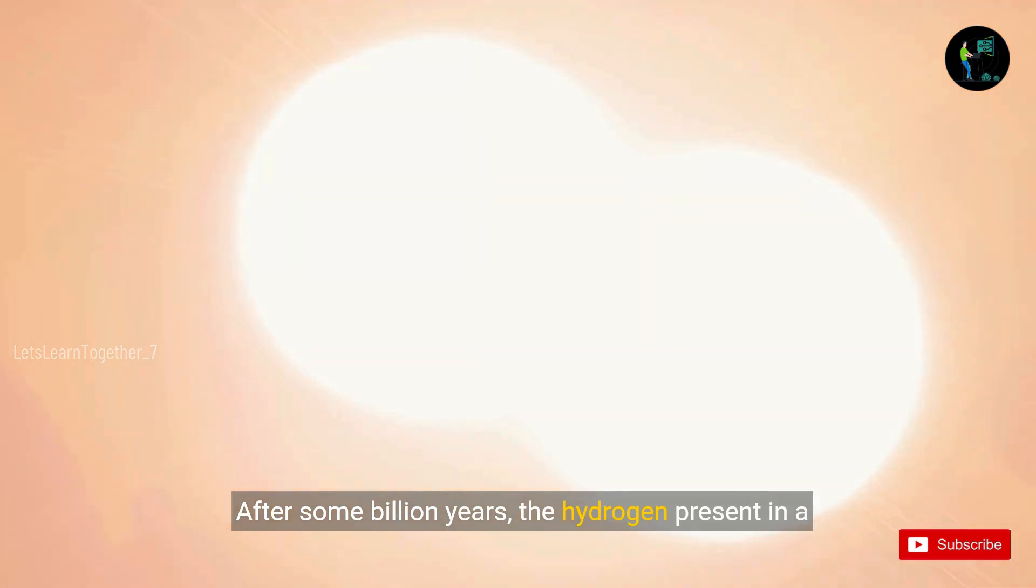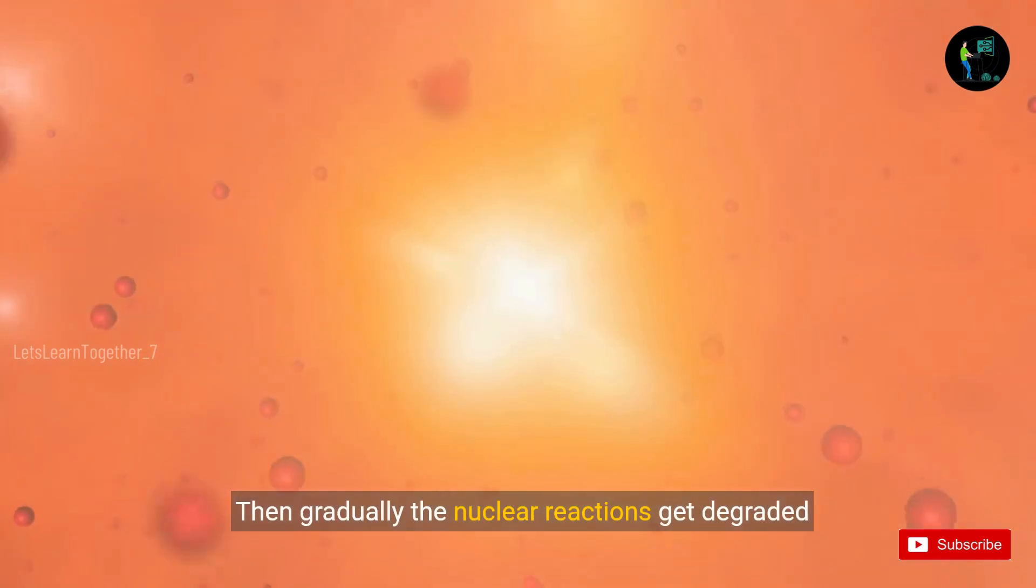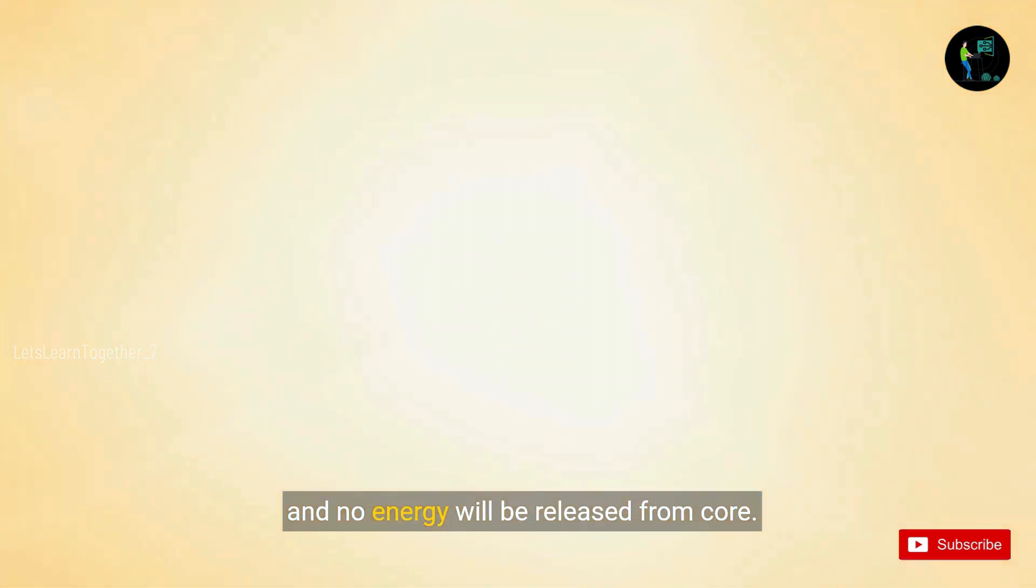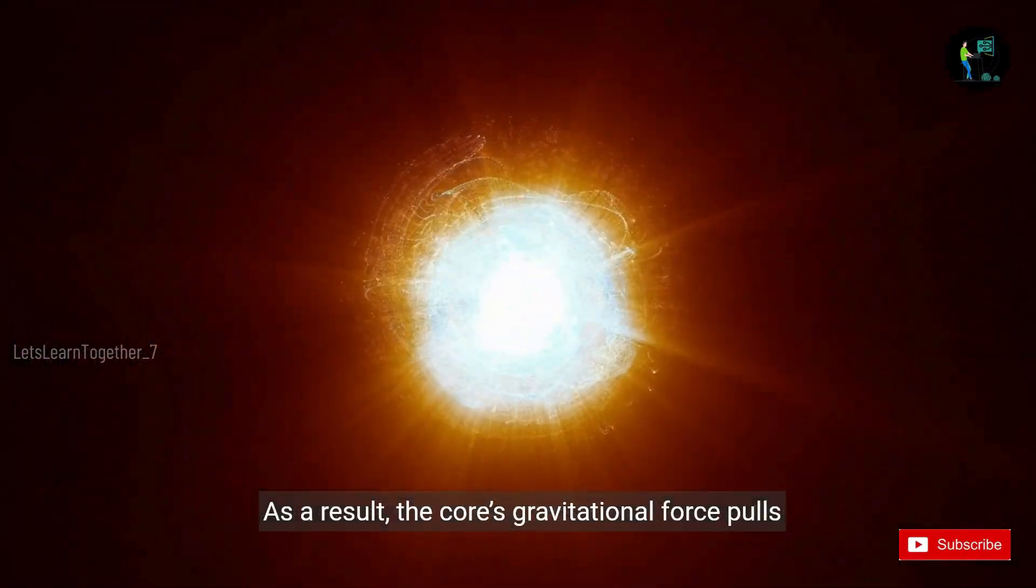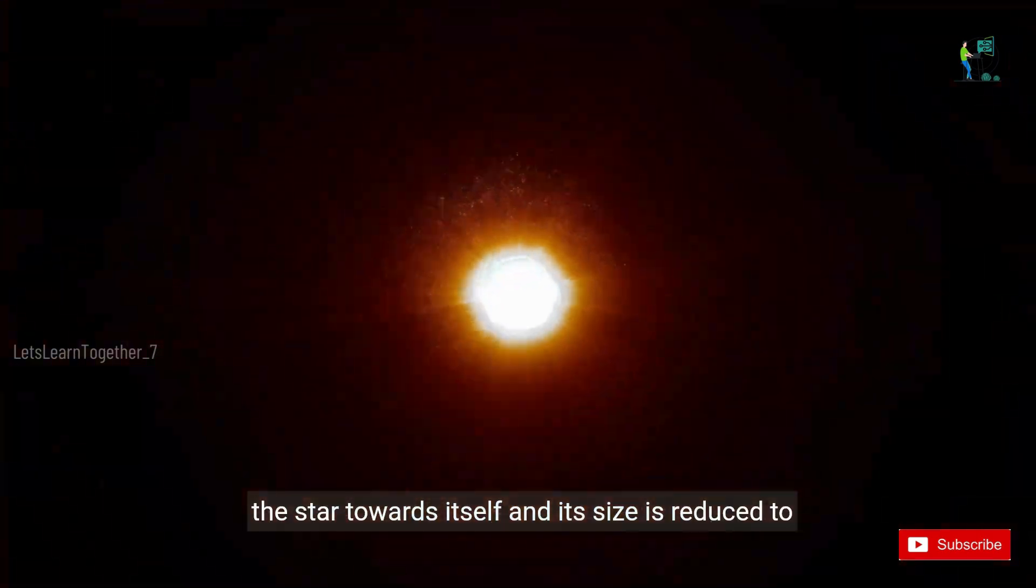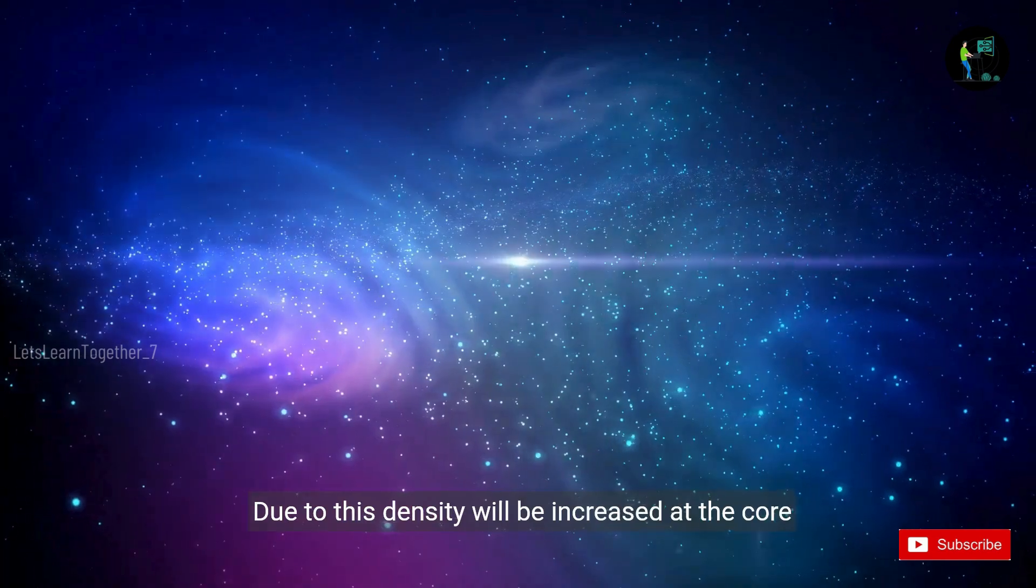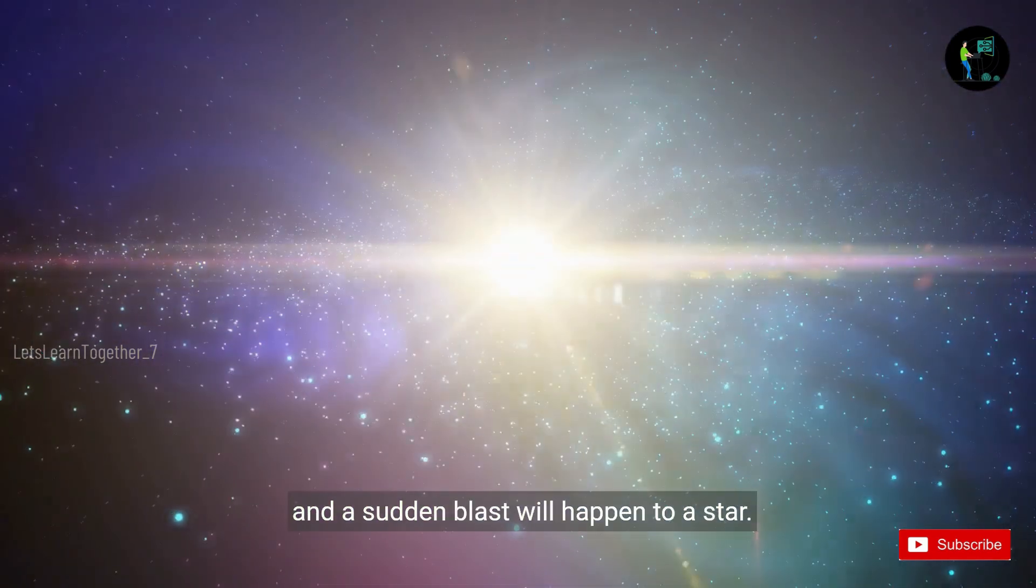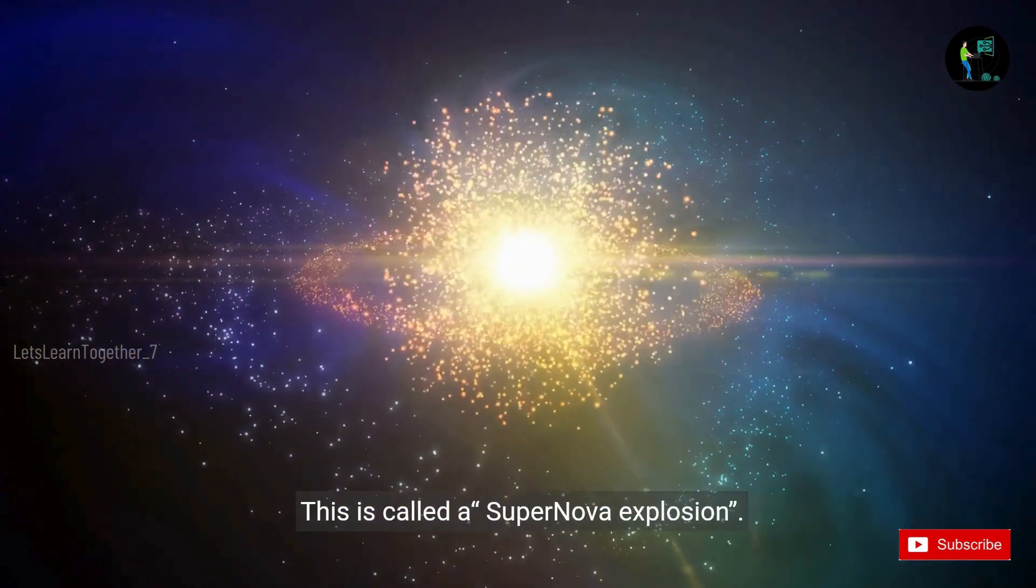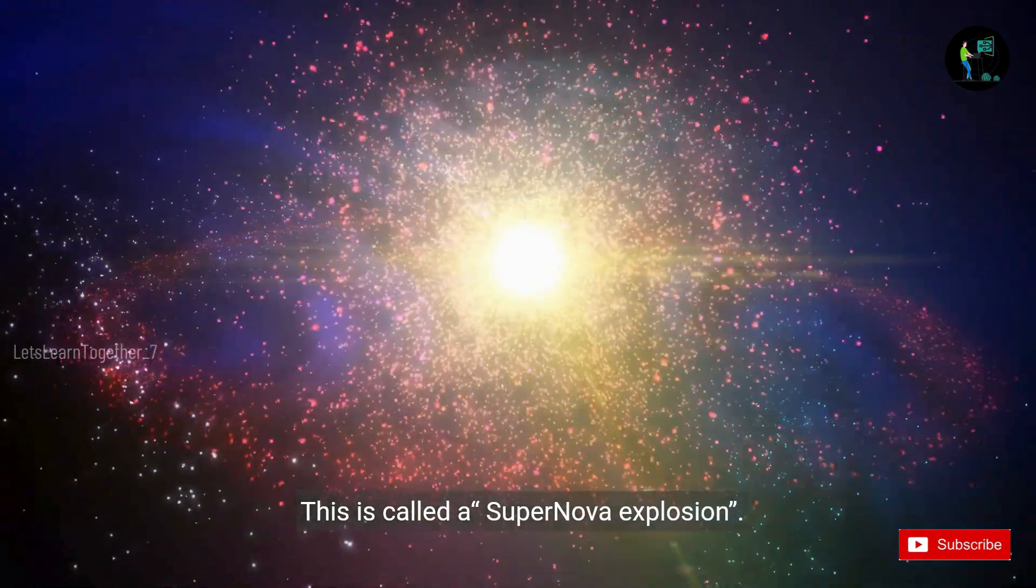After some billion years, the hydrogen present in a star will get reduced. Then gradually the nuclear reactions get degraded and no energy will be released from the core. As a result, the core's gravitational force pulls the star towards itself and its size is reduced to become like a small ball. Due to this, density will be increased at the core and a sudden blast will happen to the star. This is called a supernova explosion.